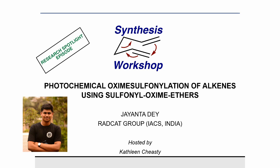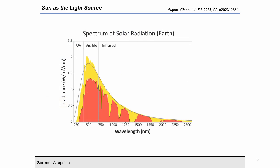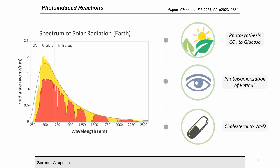I am excited to present my recent work on alkene difunctionalization using sulfonyl oxymethers as a bifunctional reagent under mild photocatalytic conditions. Before starting, as a photochemist I would like to briefly discuss visible light mediated photochemistry for the general audience. Let us have a look at the solar spectrum — the radiation reaching Earth from the Sun is of varying energy, and the visible portion drives biochemical processes such as photosynthesis, photoisomerization of retinal, and the transformation of vitamin D from cholesterol.